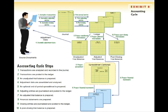The accounting cycle is how we do this. It starts off with analyzing transactions, and then in step seven it prepares the financial reports like the one you just saw. At the very end, we get the accounts ready for the next period to start the whole process over again. This is steps one through ten of the accounting cycle.